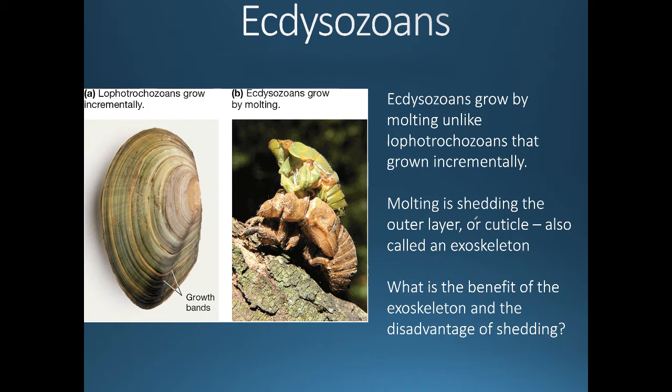Unlike the lophotrochozoans that grow incrementally — as you can see in this clam, where each layer is evidence of growth that just adds on — ecdysozoans grow by molting. Periodically they shed their outer layer, their cuticle or exoskeleton. This picture shows a cicada removing its old exoskeleton; it emerges without it, but will grow a new one.